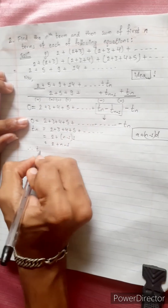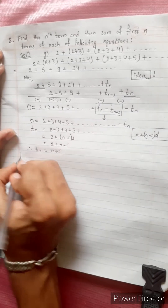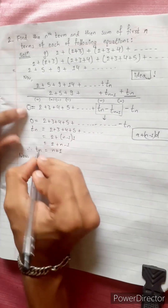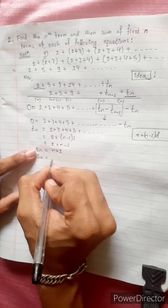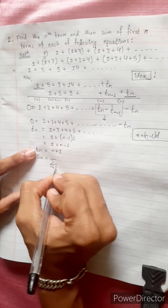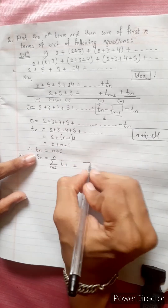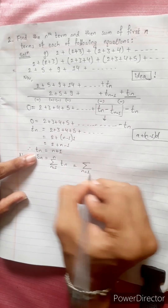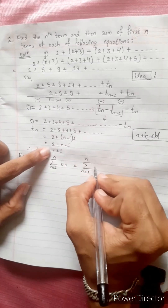The difference is 2 plus (n minus 1), therefore T_n is equal to n plus 1. Now let's find S_n. S_n equals the summation from n equals 1 to n of T_n. The formula is summation of (n plus 1).